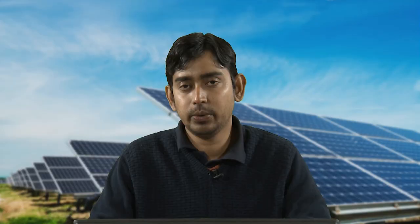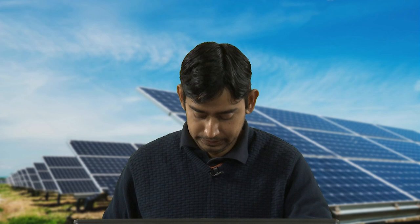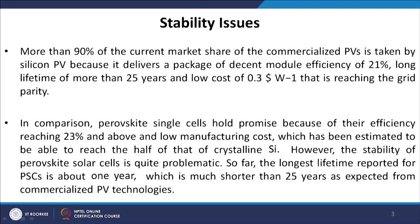Whenever you want to bring a technology to market, three things must be considered for the photovoltaic industry: efficiency, lifetime or stability, and cost. These three parameters form a triangle called the golden triangle. Each parameter is dependent on the others, so we have to optimize each individually to get the maximum output from a photovoltaic solar cell. More than 90 percent of the current market share of commercialized PVs is taken by silicon PV.